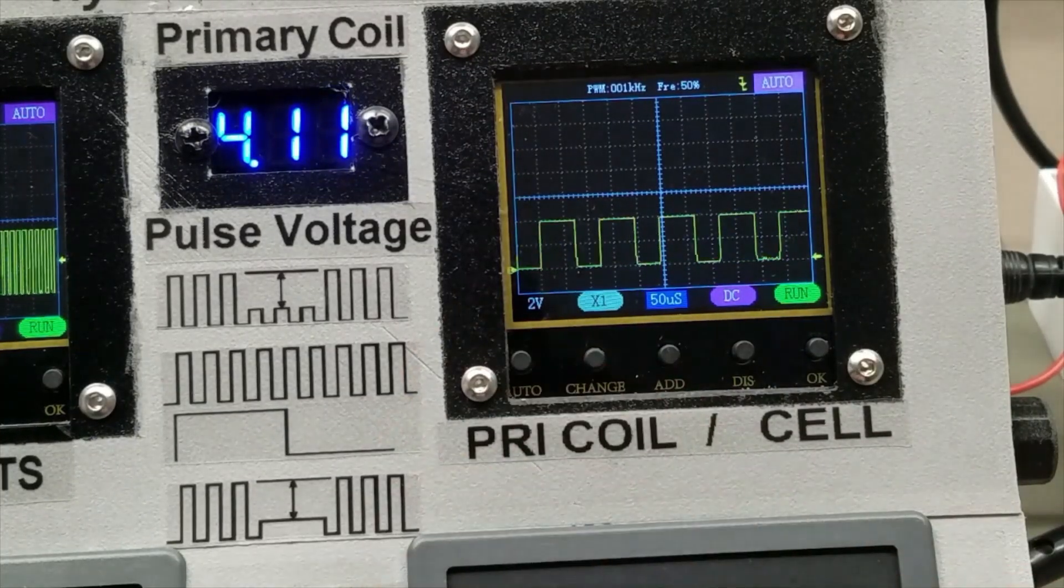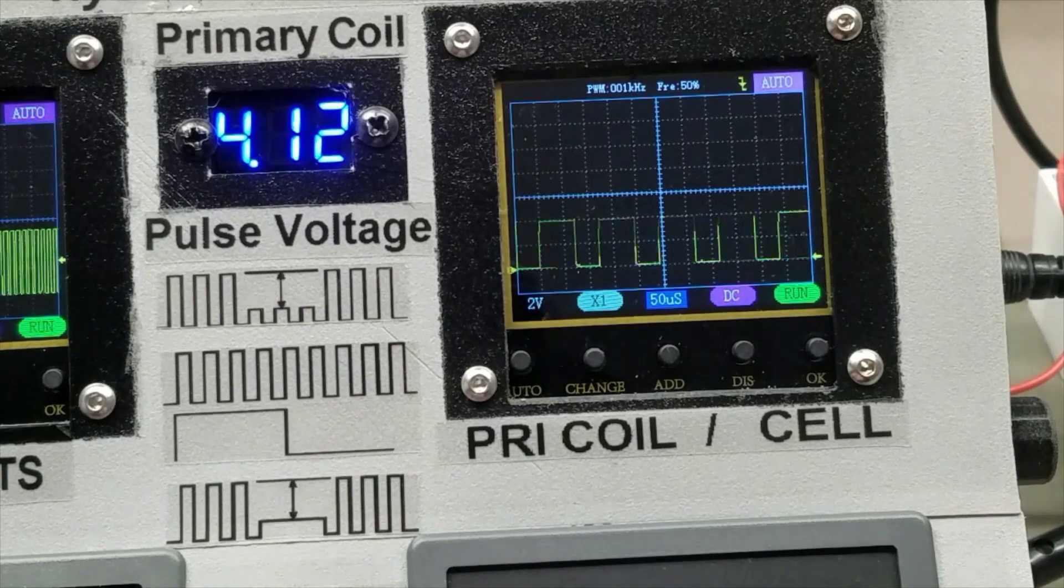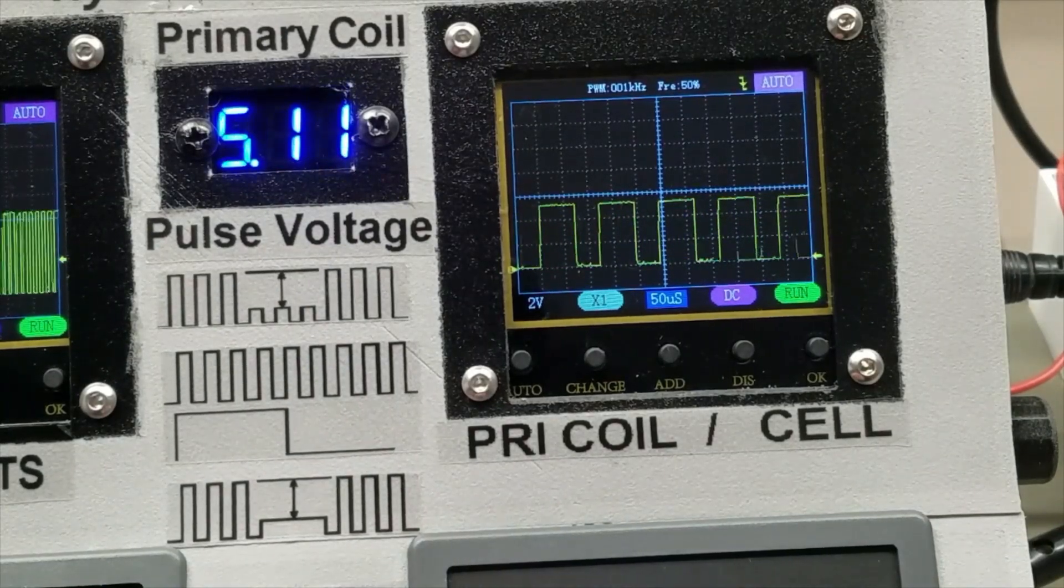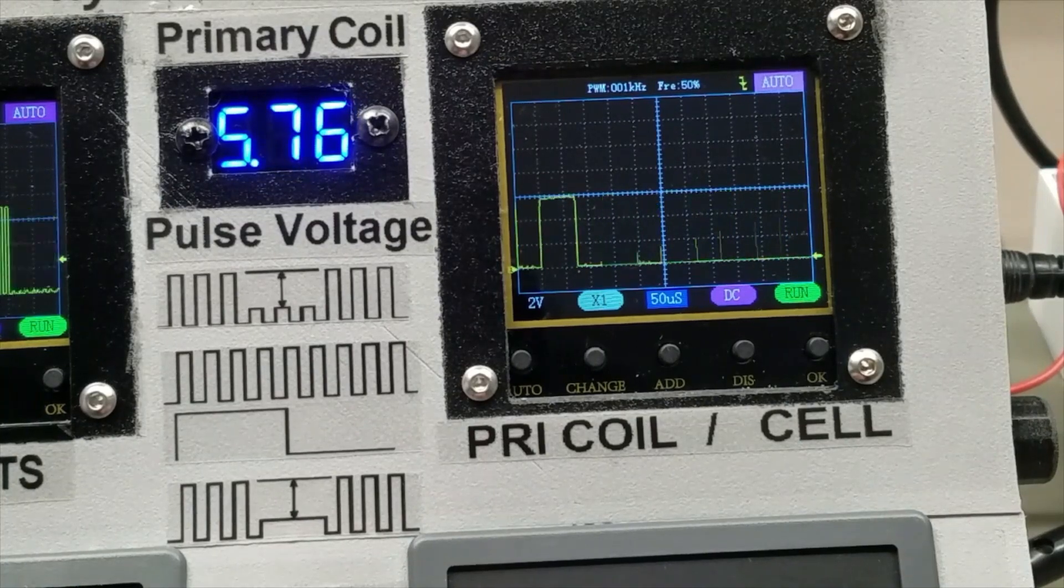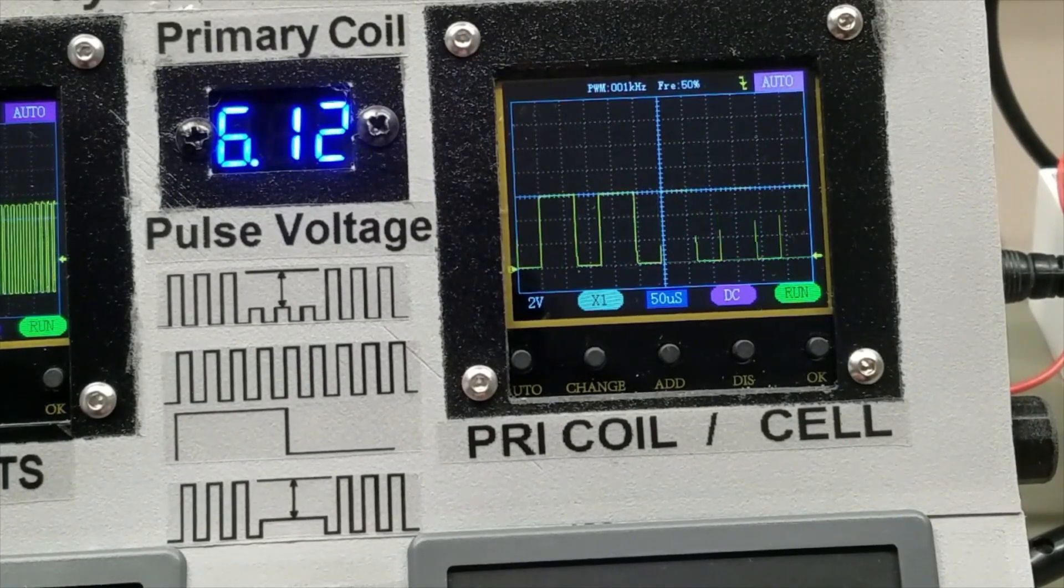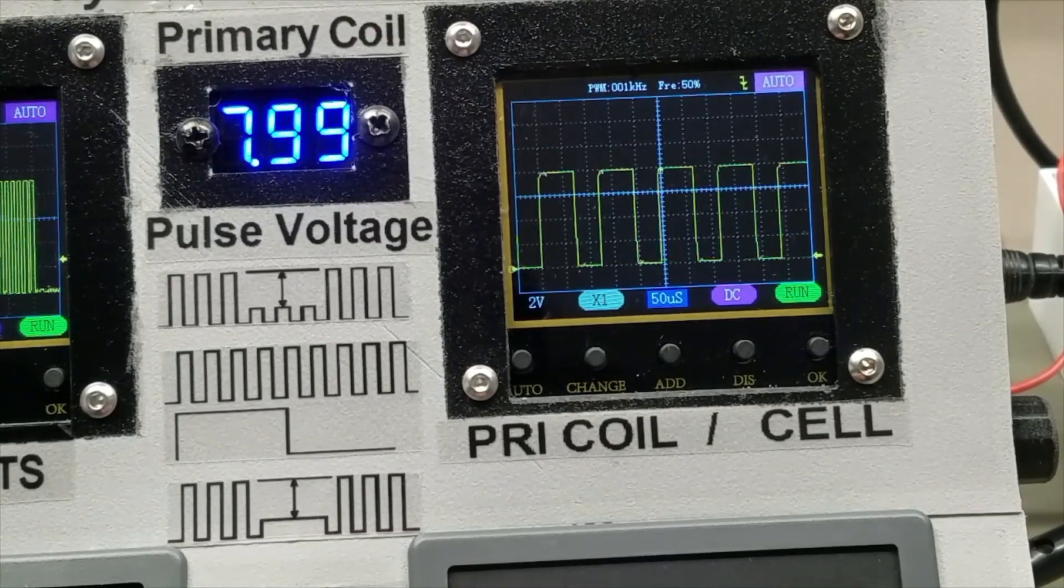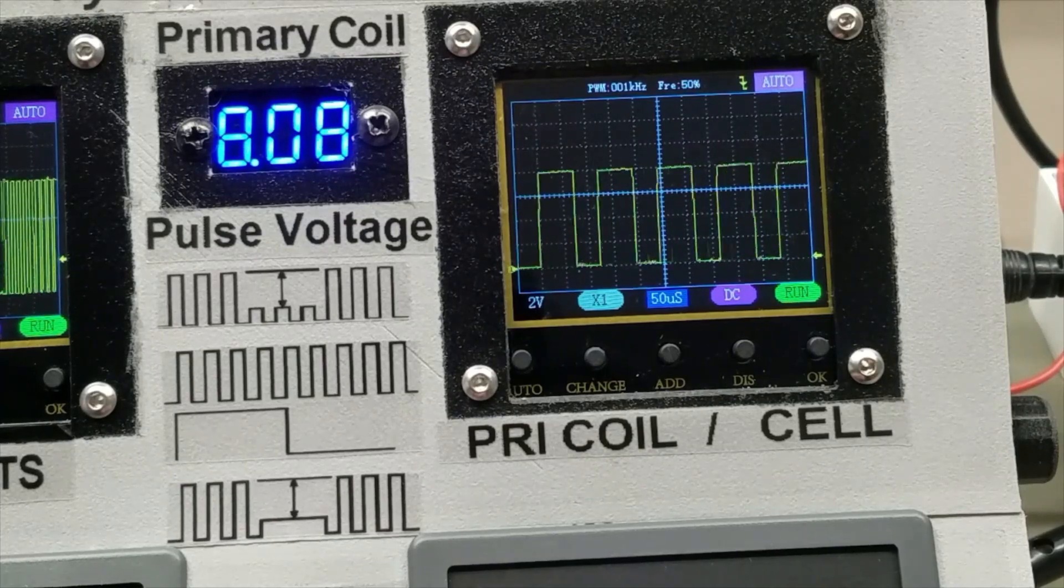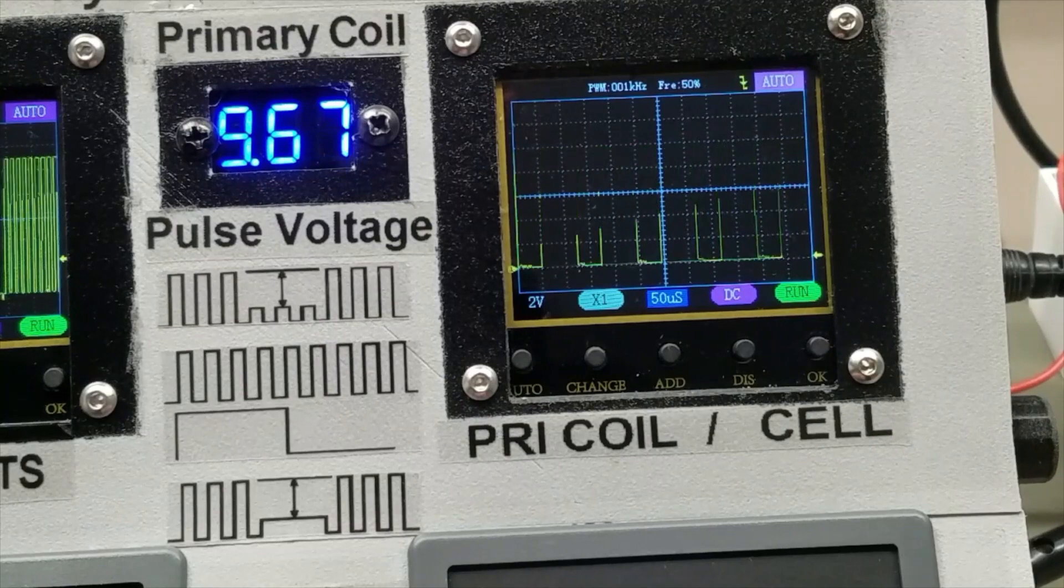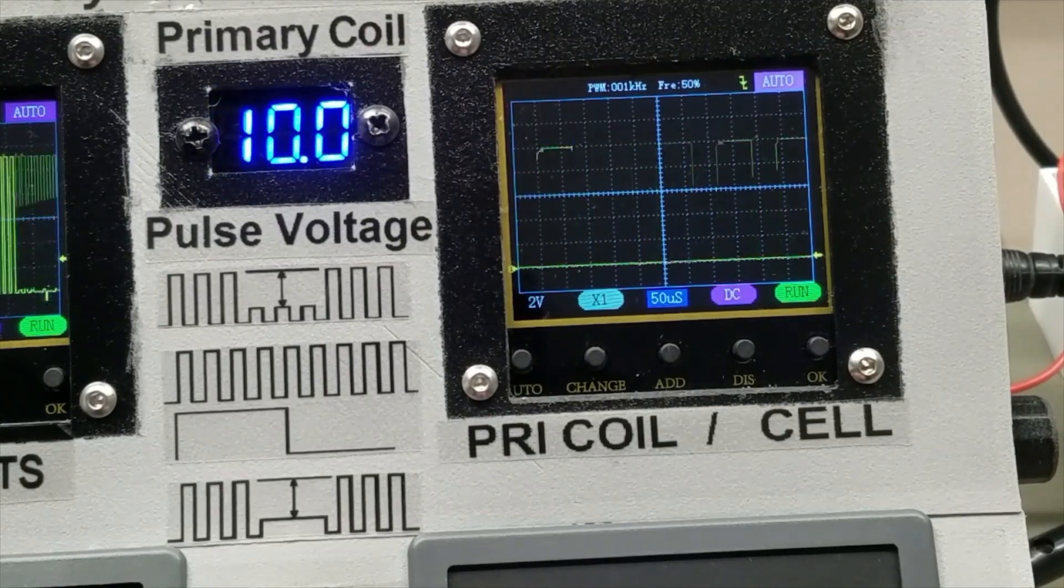In the cell scope, we're at 2 volts per division. Showing about 4 volts there, 4 volts on the voltmeter. Let's go up to 6 volts. In the cell scope, see what the voltmeter reads. I'm going to go with 6 volts. I'm going to go to 8. There we go. Finally, 10 volts.